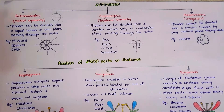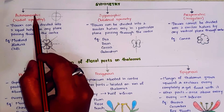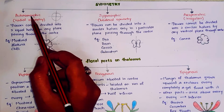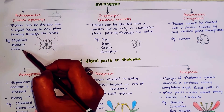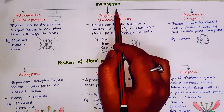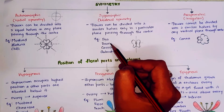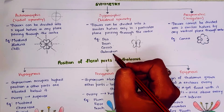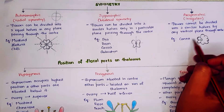Examples in this chapter are very important, so let's revise them again. Examples of actinomorphic symmetry are mustard, datura, and chili. For zygomorphic symmetry: pea, bean, cassia, and gulmohar. For asymmetric: Canna.